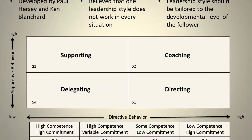Directive behavior is the extent to which a leader engages in one-way communication. They spell out what the follower's role is — they tell the follower what to do, when to do it, and how, and closely supervise performance. There's a spectrum: on the left-hand side of the table we have very low directive behavior, and on the right-hand side we have very high directive behavior.